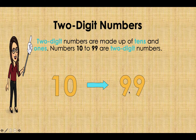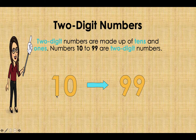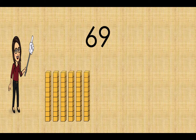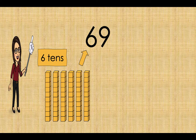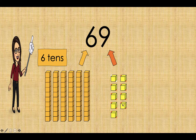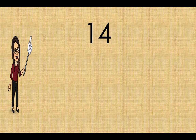Now we will step into two-digit numbers. Two-digit numbers are made up of ones and tens. Here is an example: I have the number sixty-nine. How many tens are there? Well done, there are six tens. How many ones are there? Excellent, there are nine ones. You can count and confirm: one, two, three, four, five, six — six tens — and one, two, three, four, five, six, seven, eight, nine — nine ones.